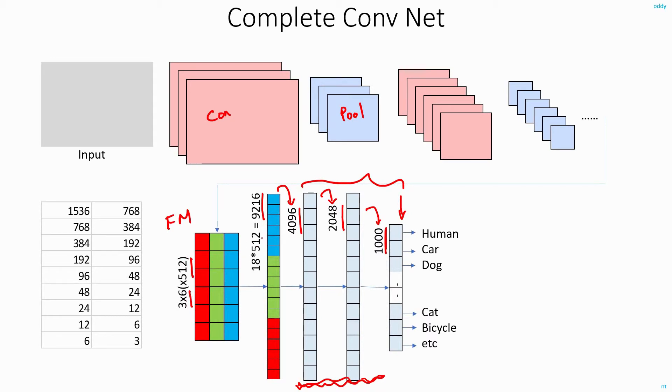You get a feature map that is having a depth of 512 and size is of 3 by 6. You expand this feature map into a single one-dimensional vector and feed it to a cascade of fully connected layers and finally apply softmax. By putting all these components together, now you can do the image classification.